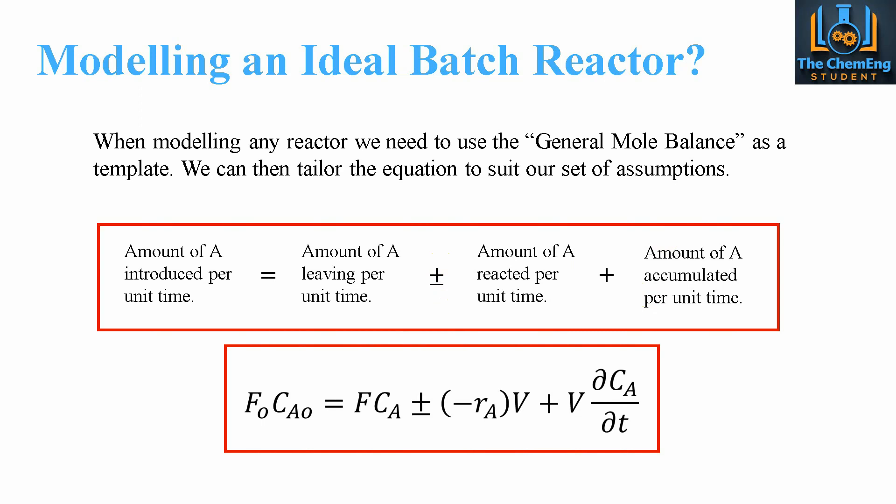For this system, we can rewrite this in terms of concentration, flow, and reaction rate constant. So we have F0*Ca0, the feed flow rate multiplied by the initial concentration, equals the outlet flow rate.